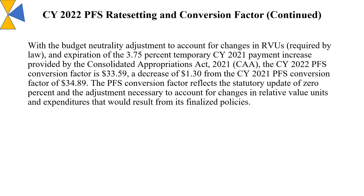With the budget neutrality adjustment to account for changes in RVUs required by law, and the expiration of the 3.75 percent temporary CY2021 payment increase provided by the Consolidated Appropriations Act 2021 (CAA), the CY2022 PFS conversion factor is $33.59, a decrease of $1.30 from the CY2021 PFS conversion factor of $34.89. The PFS conversion factor reflects a statutory update of zero percent and the adjustment necessary to account for changes in relative value units and expenditures from its finalized policies.